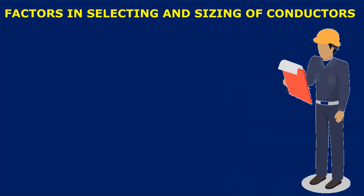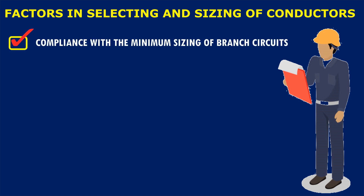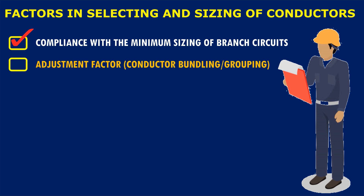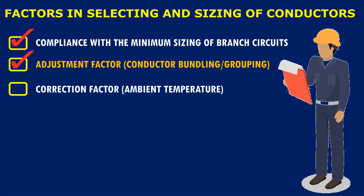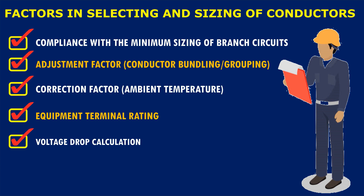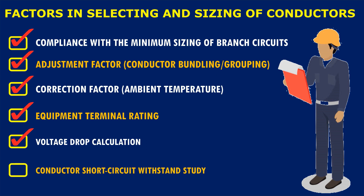We now understand all the factors to consider in choosing the correct size of conductors. These are: compliance with minimum sizing of branch circuits and feeders; correction and adjustment factors that reduce the conductor's ampacities; conductor temperature rating determined by the connected equipment terminal with the lowest temperature rating; voltage drop, which should be within accepted limits to improve performance and efficiency; and the conductor's ability to withstand short circuit current without thermal damage until the overcurrent protective device trips or clears the fault. Hence, selecting the correct size of conductors involves referencing more than one section and chapter in the Philippine Electrical Code.